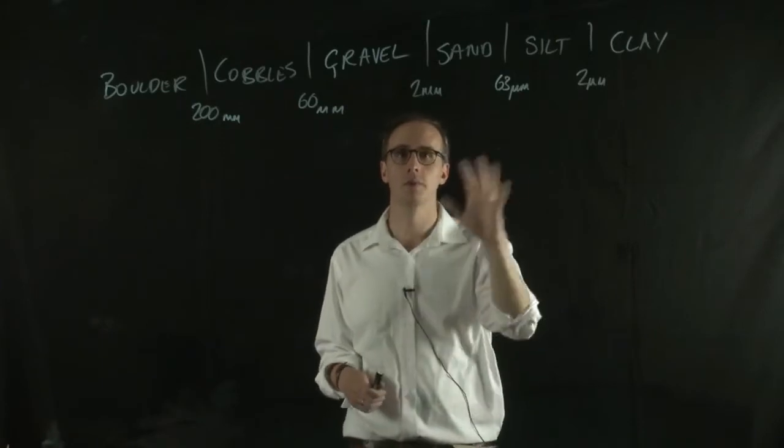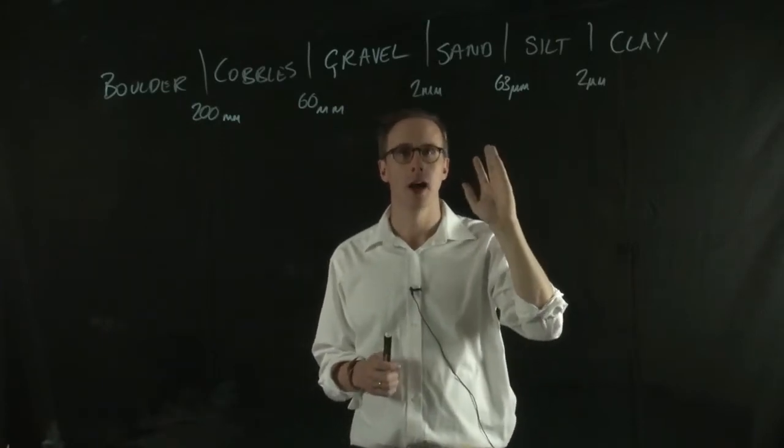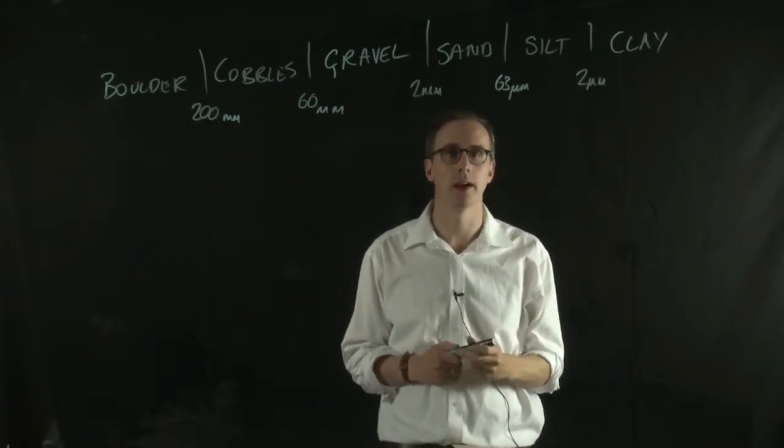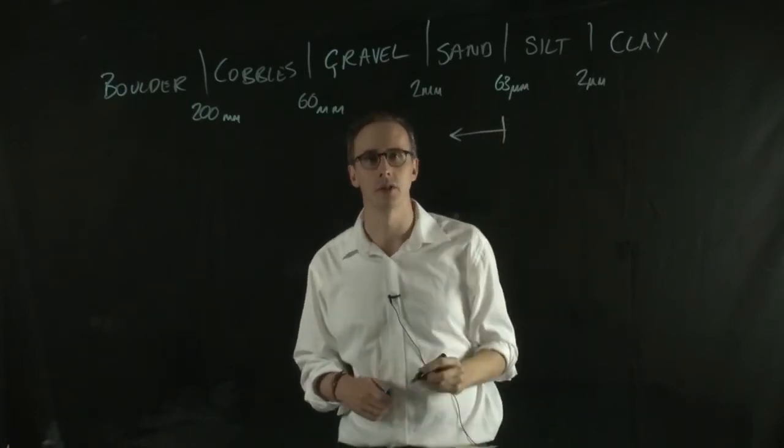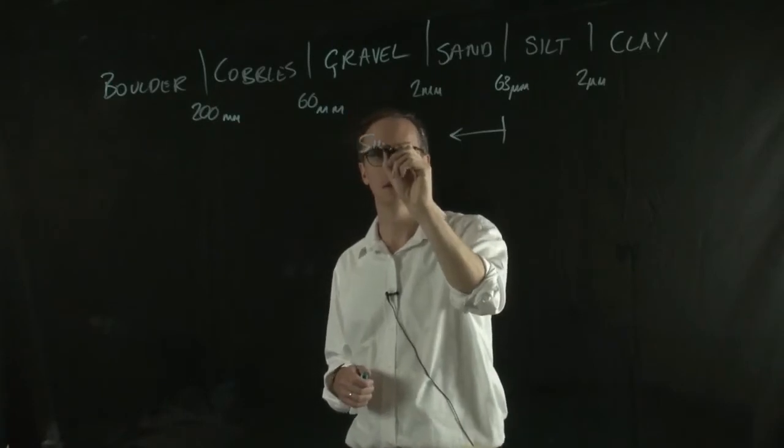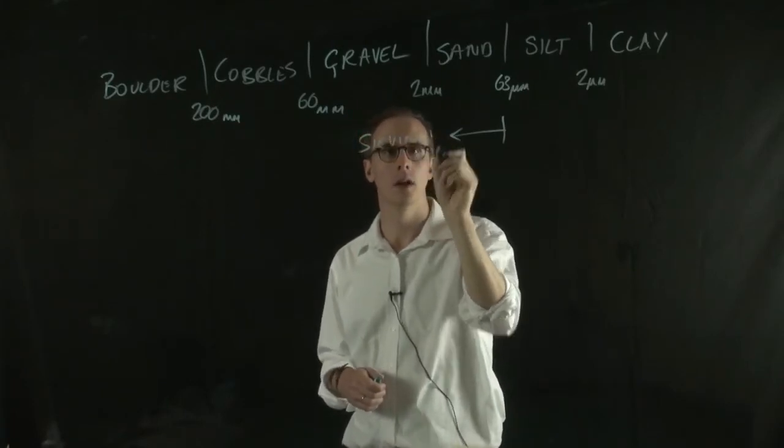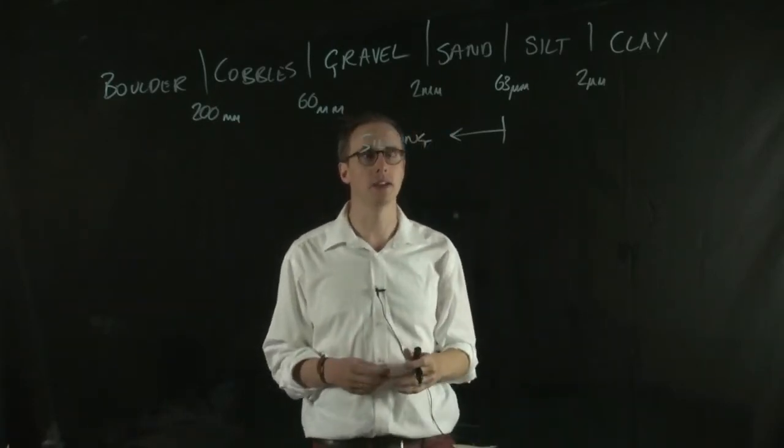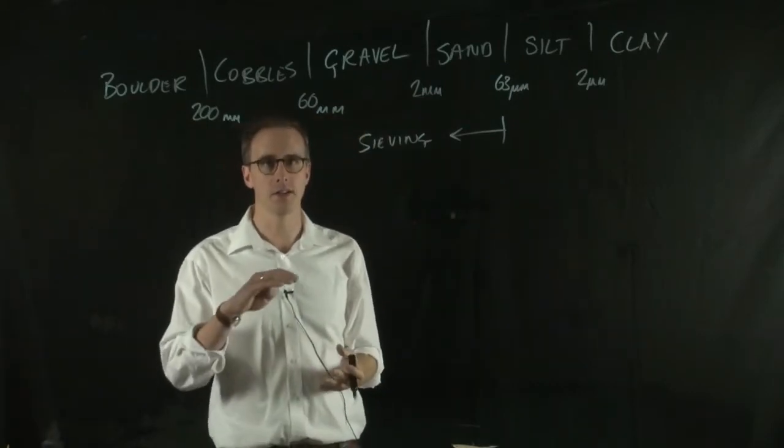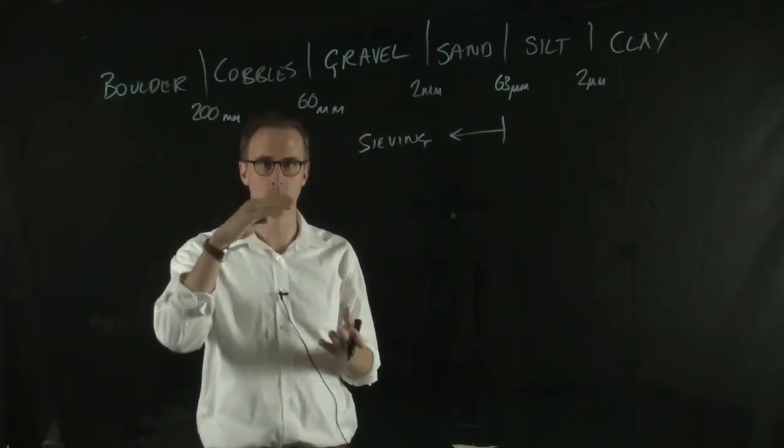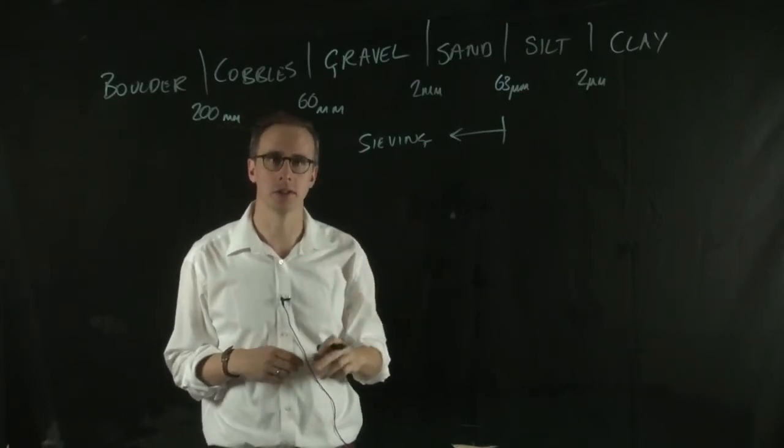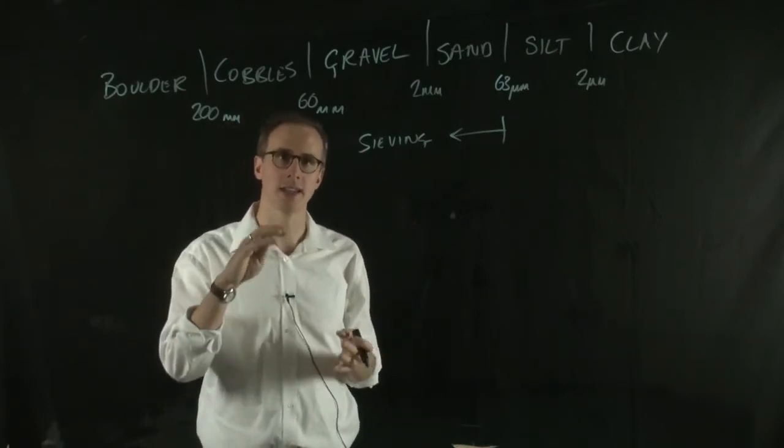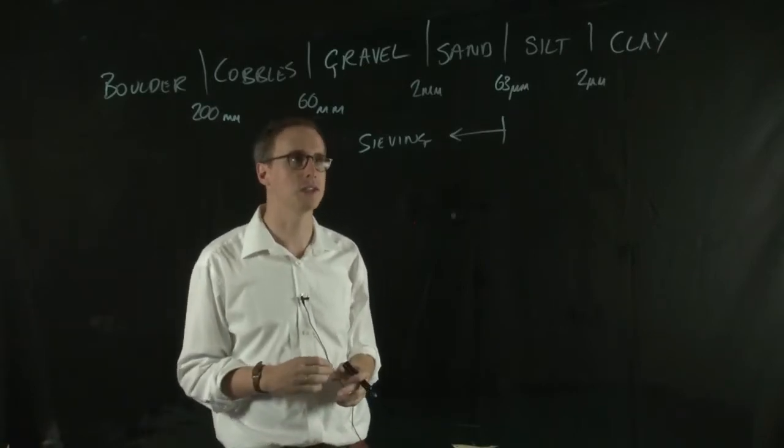We have a range of particle sizes within soils and we can measure that in a number of different ways. Anything above 63 microns we can measure through sieving, either dry sieving or wet sieving, where we stack a series of decreasing aperture sieves on top of each other, put your sample into the top and shake it, and then measure the mass that's retained on each sieve.